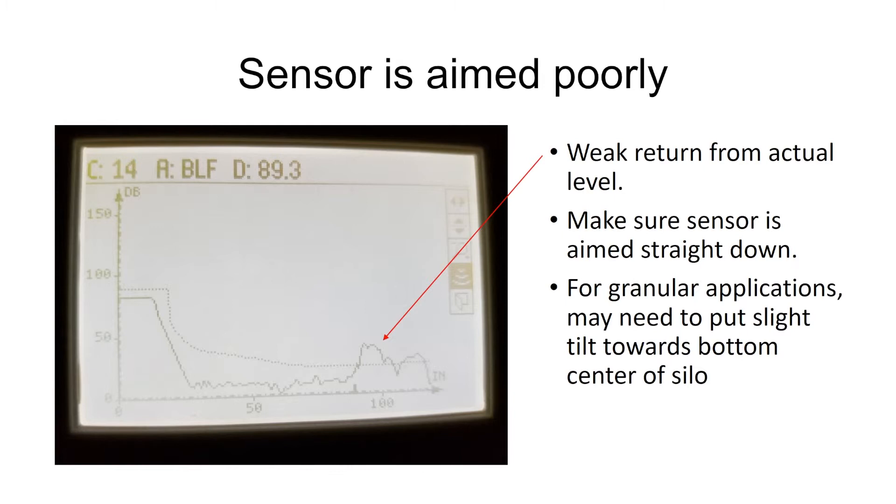Now, if you are using ultrasonics for granular level, you may want to have the sensor pointed a little bit towards the bottom center of the silo so that the reflection we get is more normal to the granular product. But for liquid applications, you definitely want to have it pointed straight down.